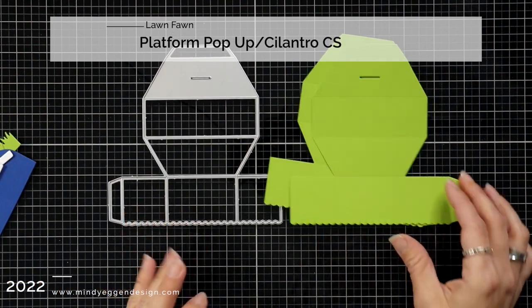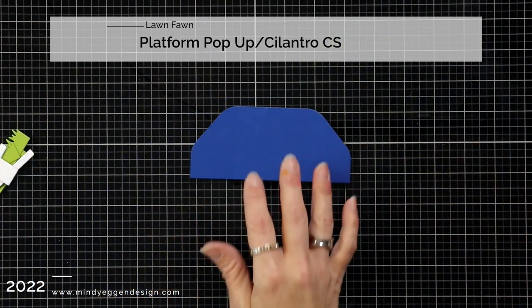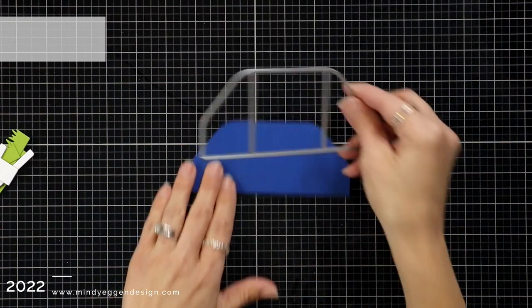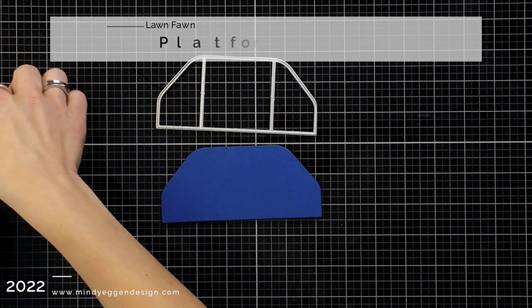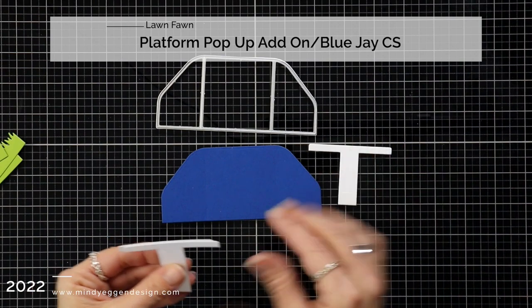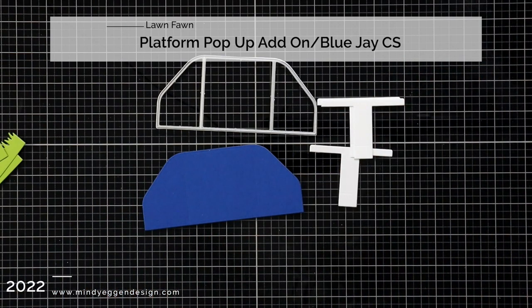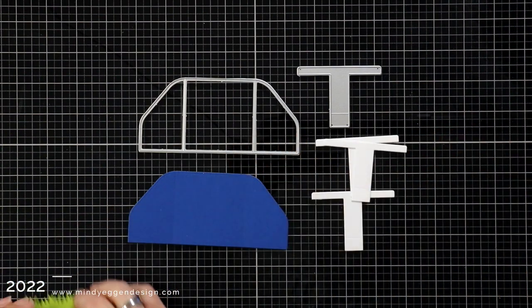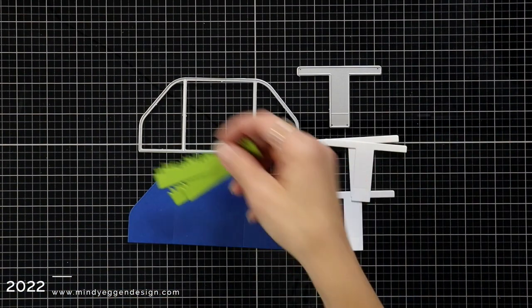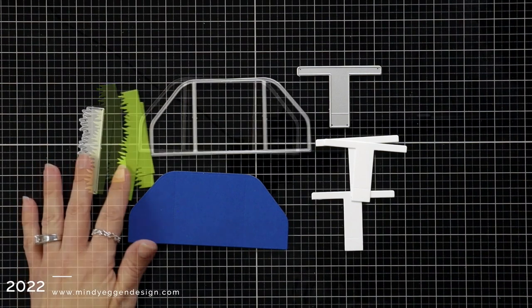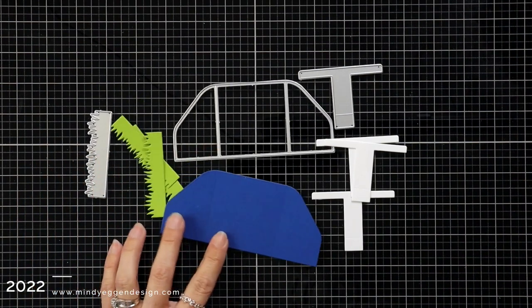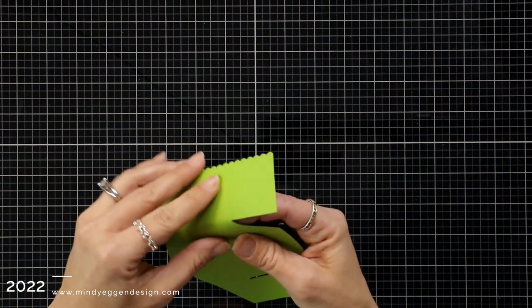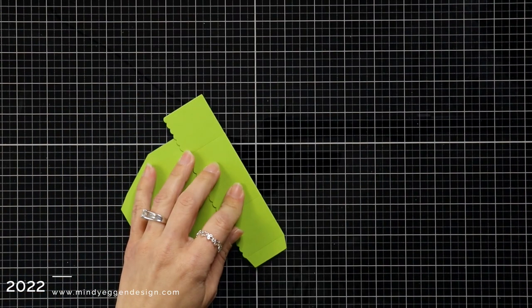Off screen I did all my die cutting. This is the main platform pop-up piece. You need two of them die cut from cilantro cardstock. This is the platform pop-up add-on die cut from blue jay cardstock. I have these three T-pieces that are part of the regular platform pop-up, and then I also have some grass pieces die cut from the cilantro cardstock.